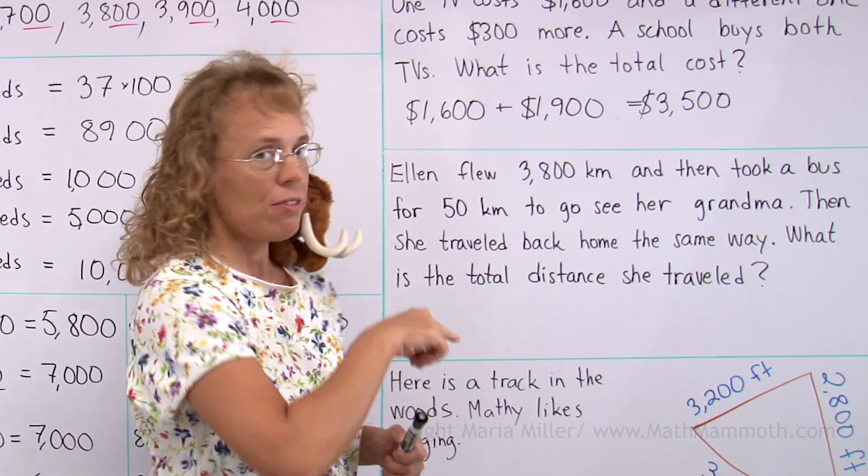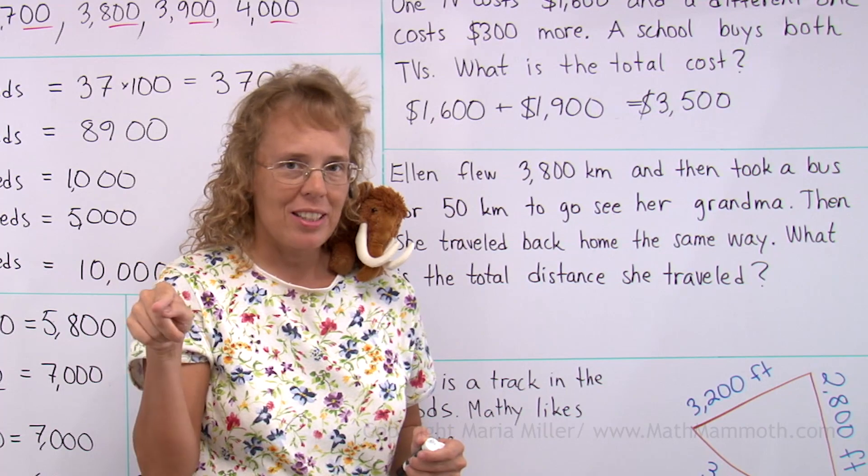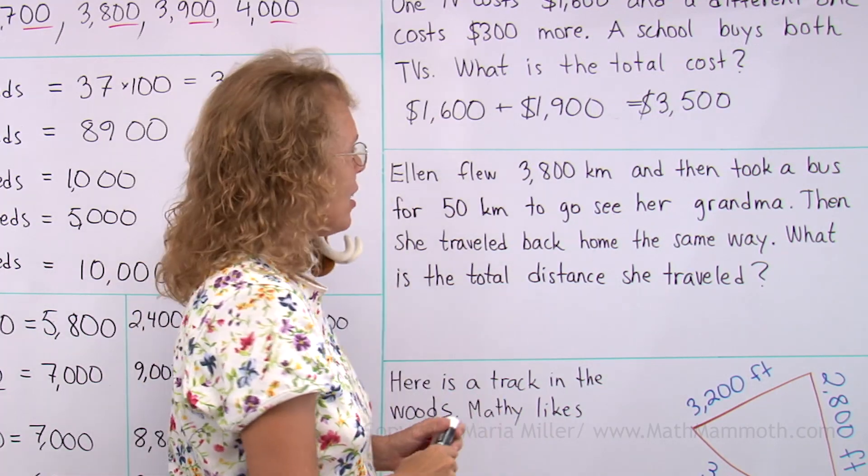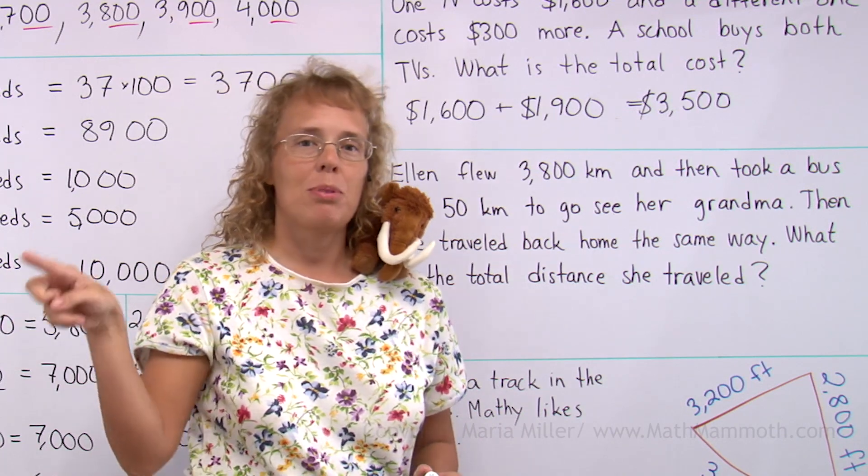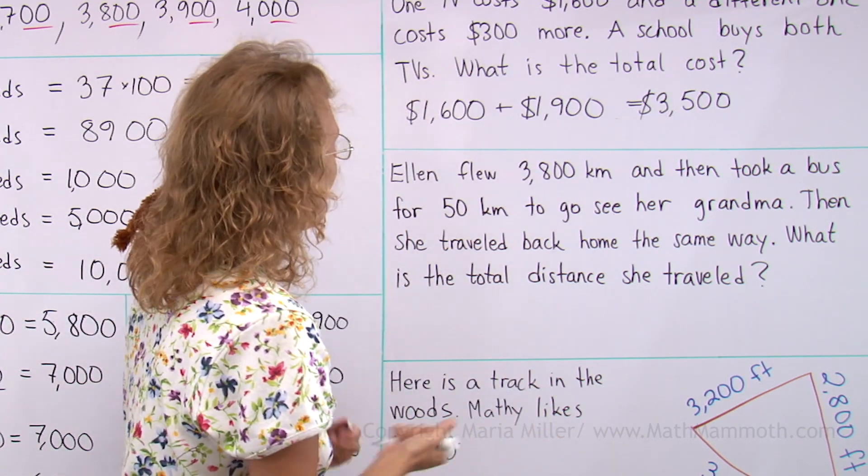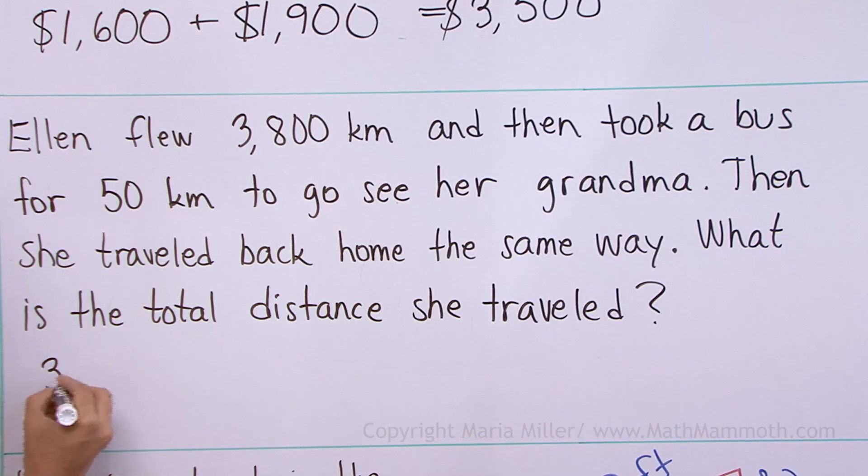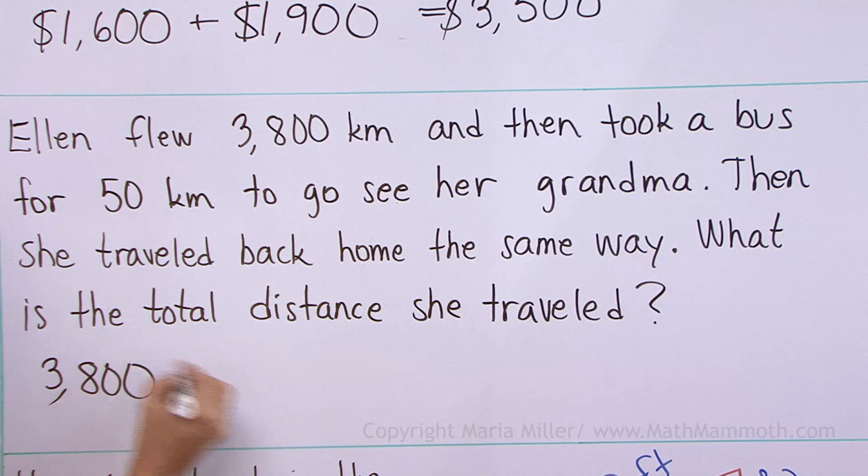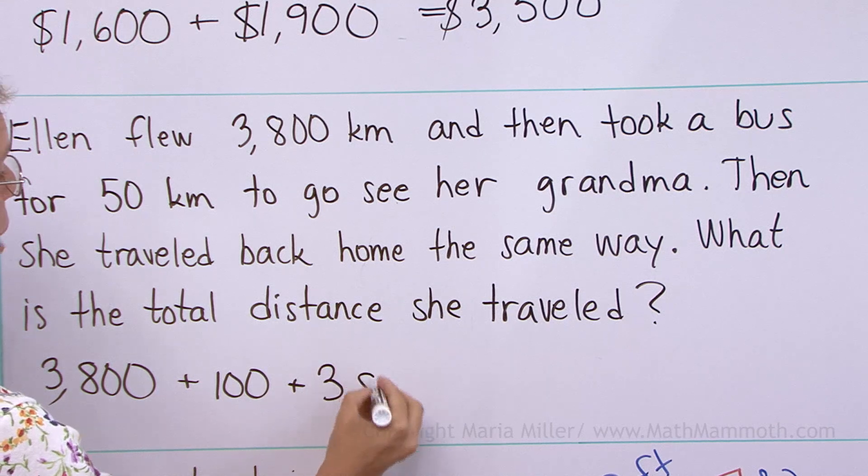What is the total distance she traveled? Okay. She flew, she took a bus. Then she saw her grandma. Then she took a bus and flew, right? So we need to add those numbers. 3,800 plus 50 plus 50 plus 3,800. Now 50 plus 50 is pretty easy, right? We have the 3,800 and then 50 plus 50. So that's 100. And then the 3,800 back. All of these are kilometers.